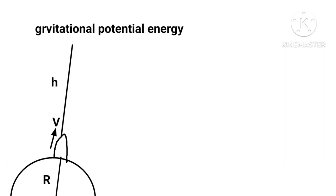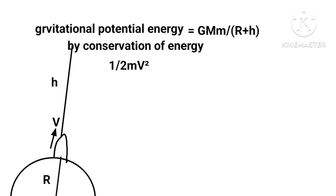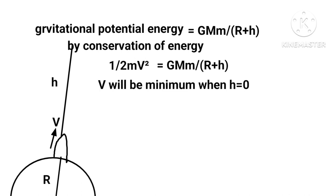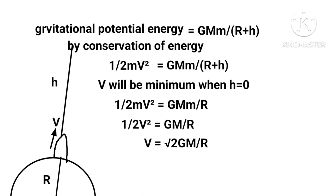Gravitational potential energy at height h equals GMm upon R plus h. By conservation of energy, one half mV squared equals GMm upon R plus h. V will be minimum when h equals zero. Therefore, one half mV squared equals GMm upon R, which gives V equals square root of 2GM upon R.